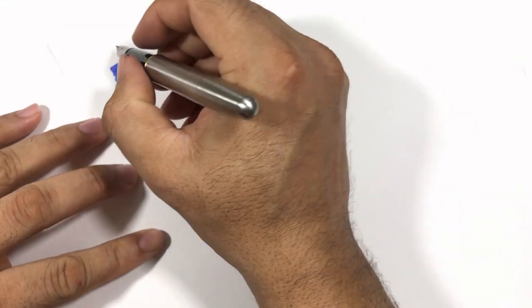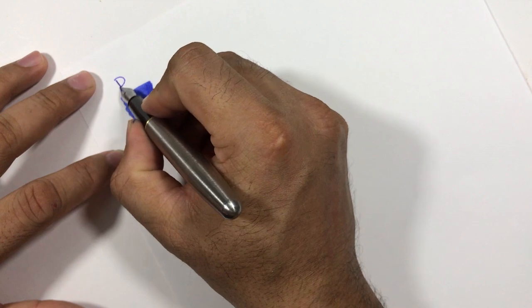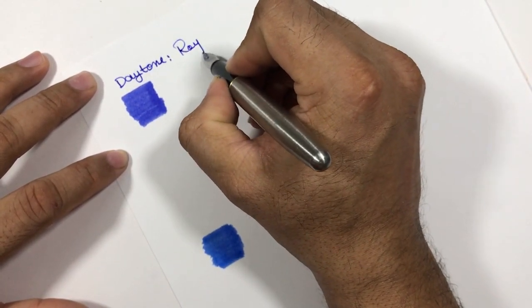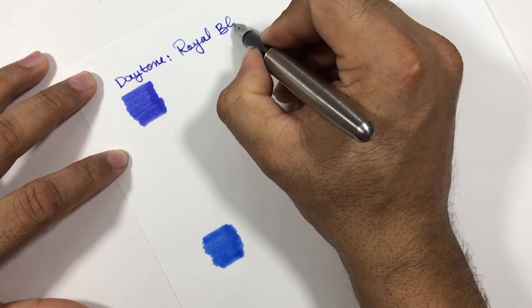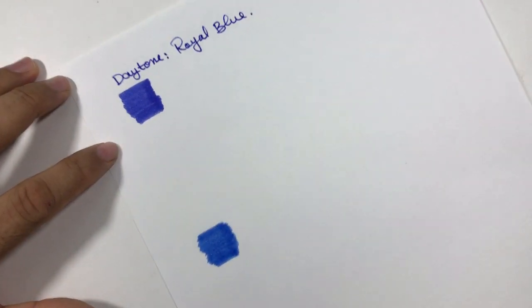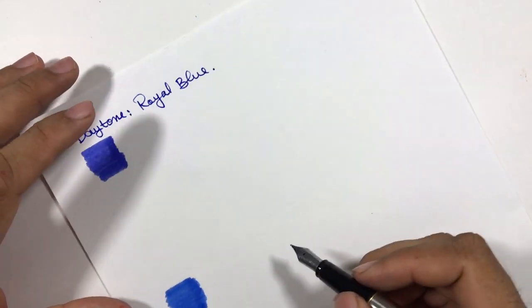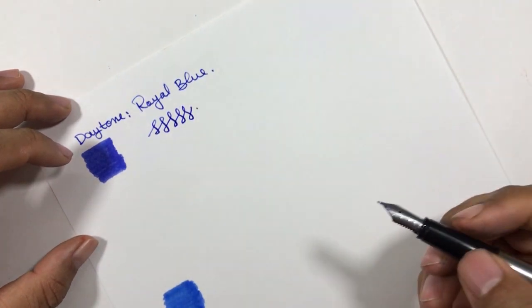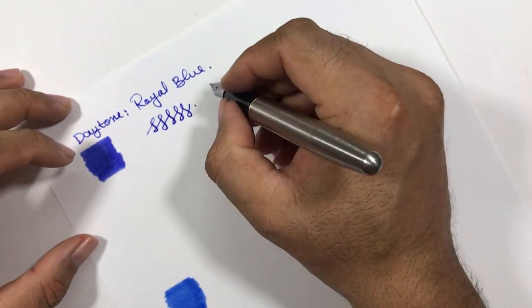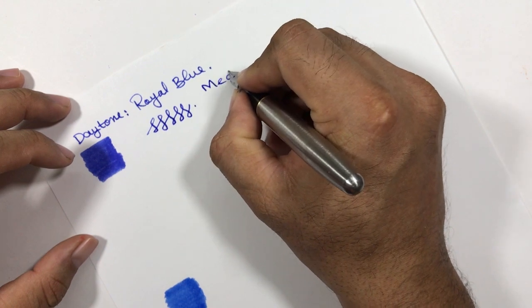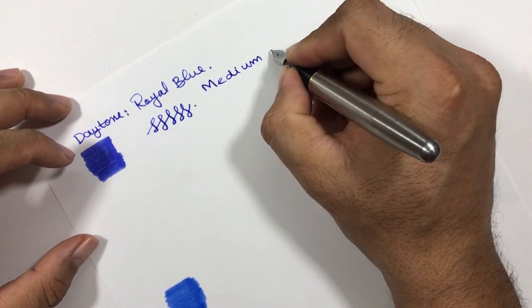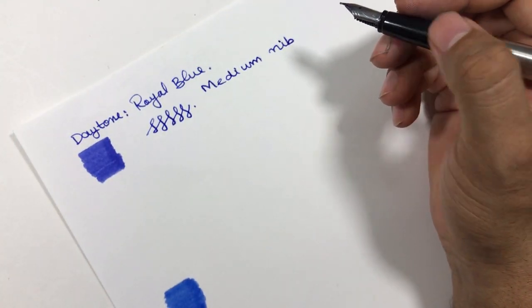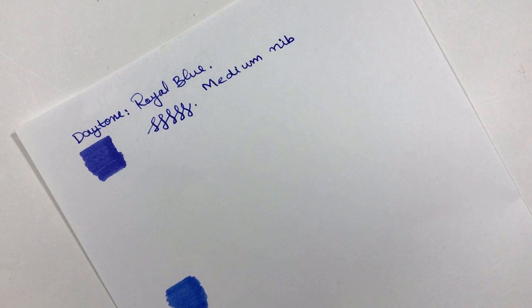This is Daytone Royal Blue. You can see here, I'll just write something. This is a medium nib, and I'm using 100 GSM paper for this. I'll write something with a broad nib also.